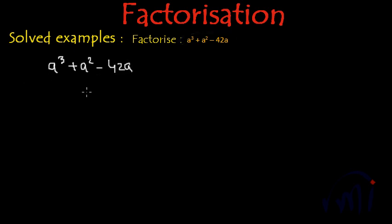This is an expression where every term has a variable. But if we see properly, we have at least one 'a' in each term. So we can take 'a' common and inside the bracket we will have a² + a - 42.